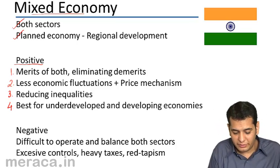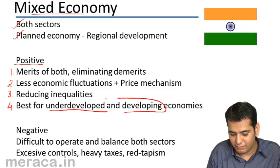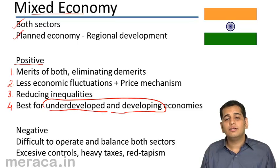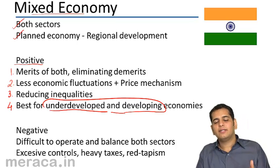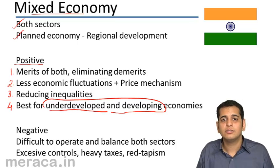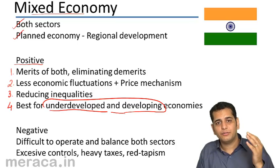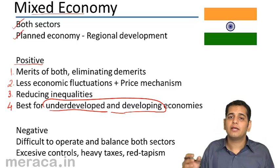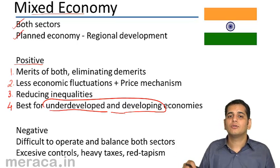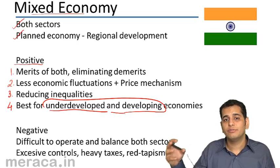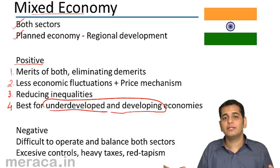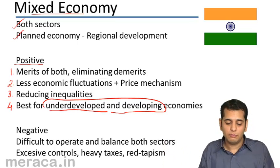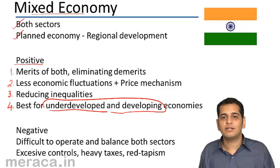This type of economy is best for underdeveloped and developing economies. In these economies, on one hand, you can let private individuals take over production. On the other hand, the government can concentrate more on planning — which areas need to develop, which areas need more focus. This brings about balanced growth and faster development for underdeveloped and developing countries.